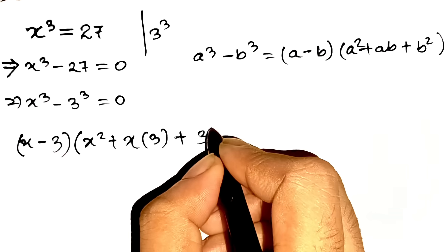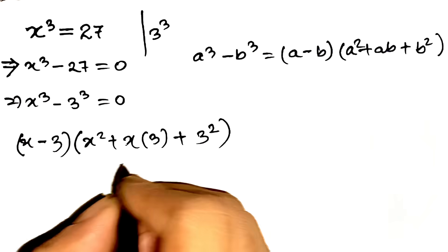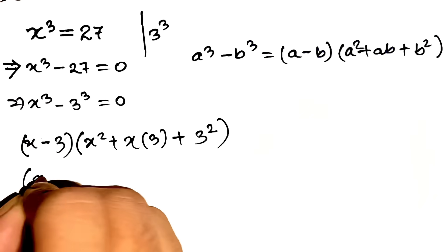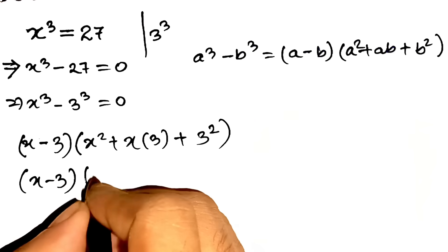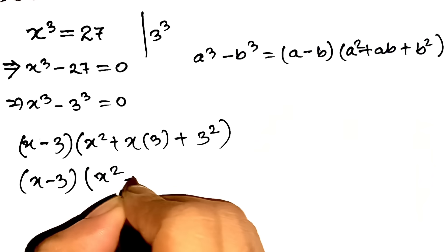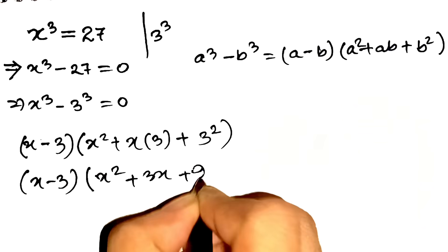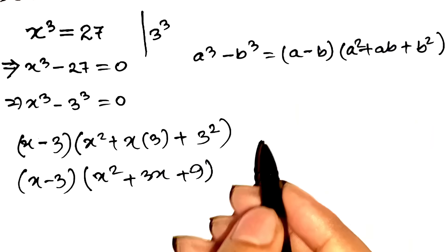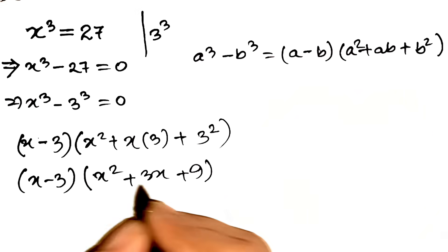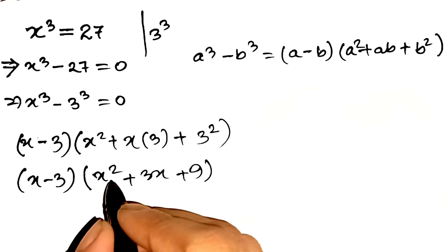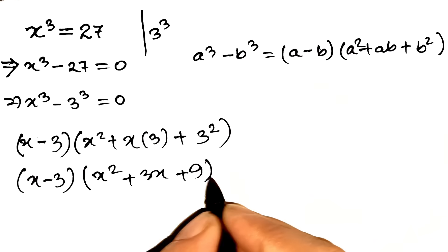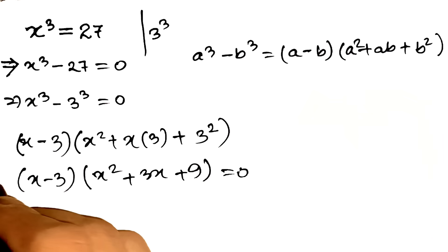Simplify that second part: x times 3 is 3x, and 3 squared is 9, so we've got open parentheses x minus 3, close parentheses, times open parentheses x squared plus 3x plus 9, close parentheses. Our equation is now (x minus 3)(x squared plus 3x plus 9) equals 0.